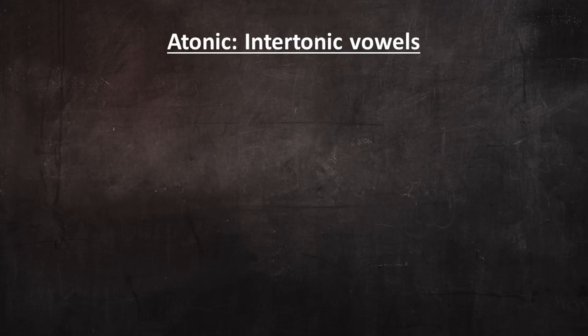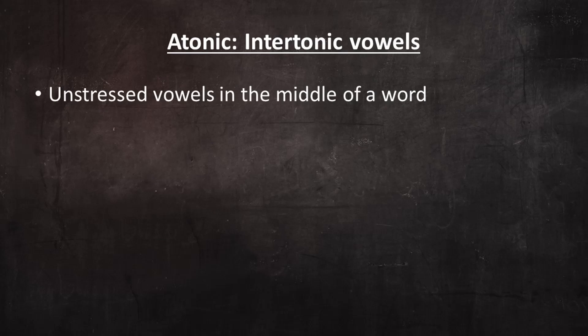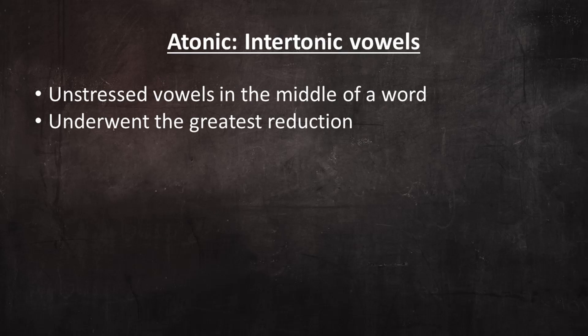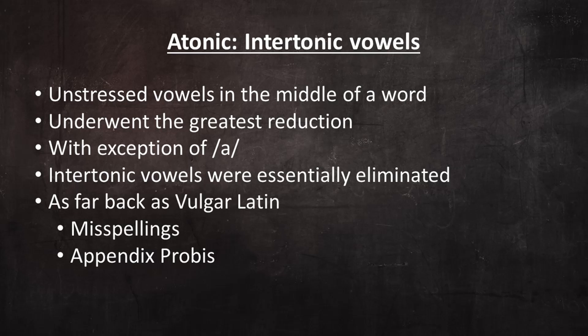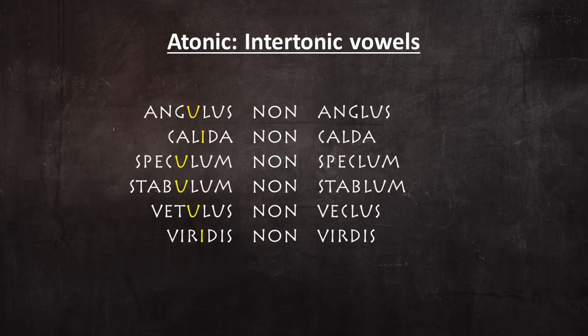Intertonic vowels: unstressed vowels in the middle of a word underwent the greatest reduction of all Latin vowels. With the exception of A, intertonic vowels were essentially eliminated as Latin evolved into Spanish. Intertonic vowels began to disappear as far back as Vulgar Latin, as attested by misspelled words from the Roman era and the Appendix Probi. During this stage, intertonics were lost in specific phonetic contexts — contact with R or L, sometimes with N or S. Here are some examples from the Appendix Probi.